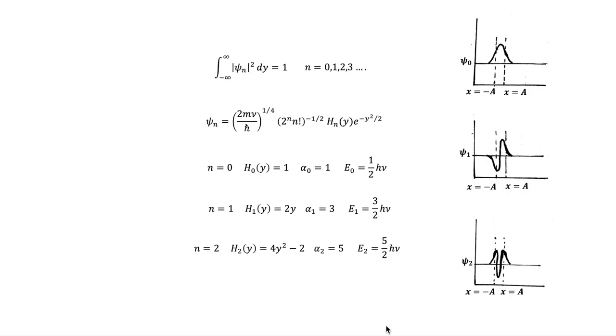For each parameter value αₙ, there is a different wave function ψₙ. It consists of a polynomial Hₙ(y) called the Hermite polynomial in either odd or even powers of y and an exponential factor e^(-y²/2) and the numerical coefficient.